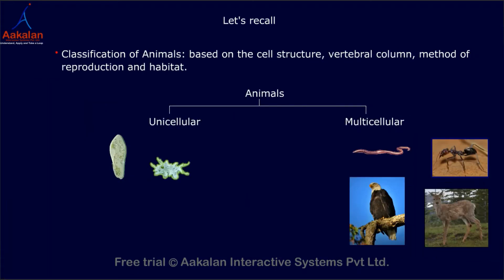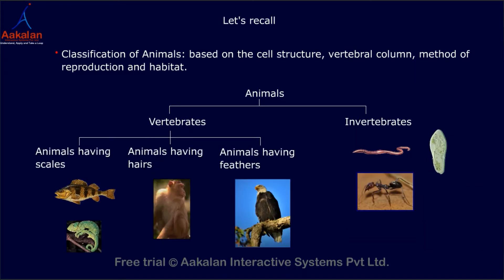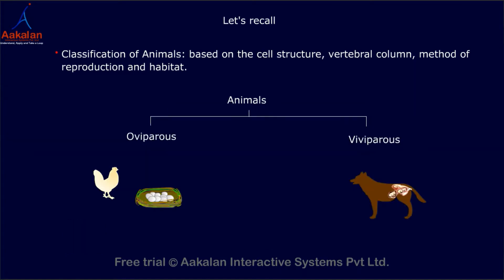Animals are classified based on their cell structure, vertebral column, method of reproduction, and habitat.